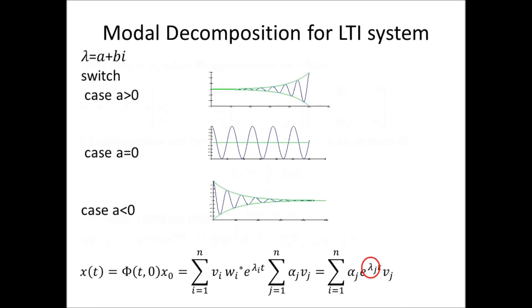If lambda i have a non-negative real part, the corresponding components will blow up or oscillate with a constant magnitude. Otherwise, the component will eventually die down.